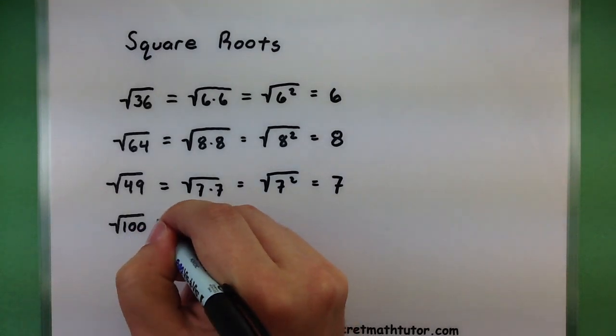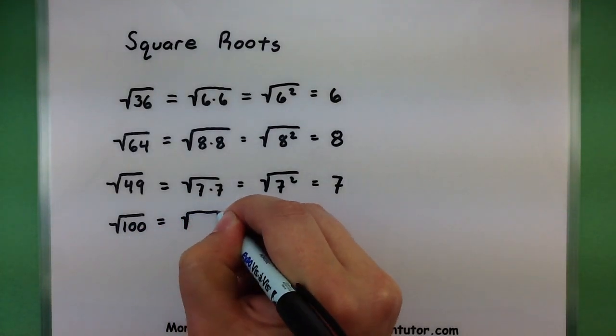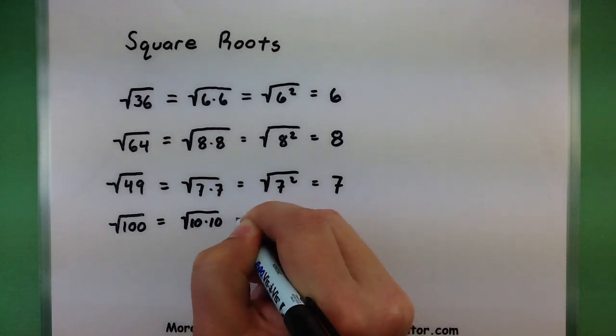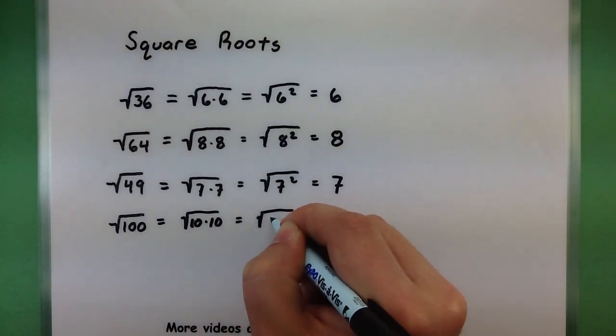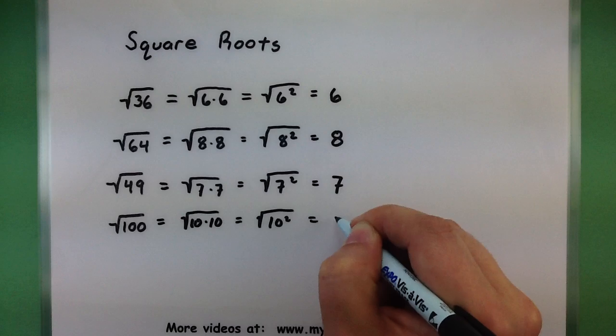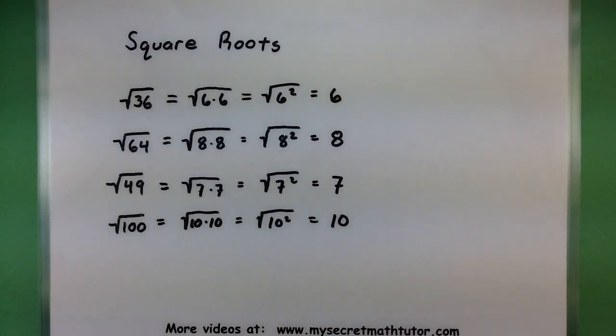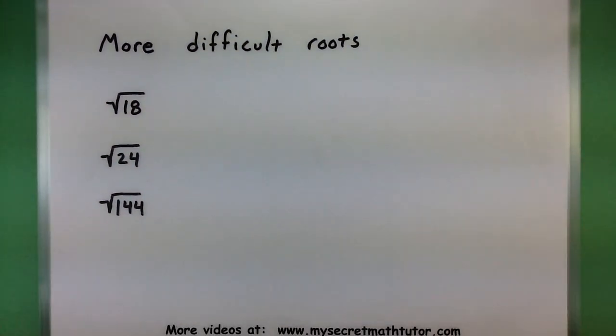And one more looks like we have 100 here. Well, that's the same as 10 times 10 or 10 squared. 10. Nice. Now, some roots, you can't necessarily break them down into two nice numbers that would multiply and give you the number underneath the root. So in some of these more difficult ones, we'll have to attack them in a slightly different way, see what can come out of the root and maybe what has to stay underneath there.